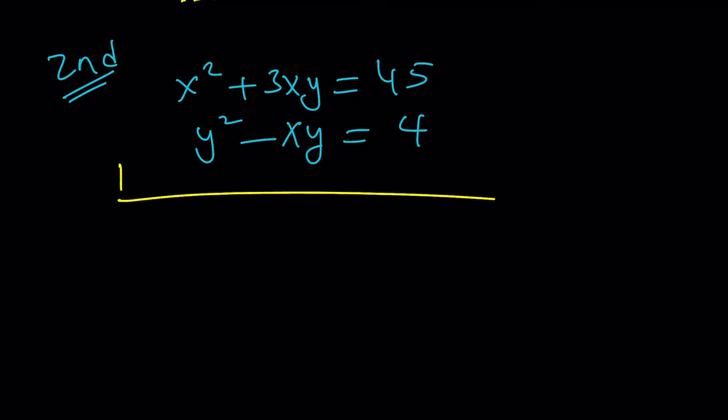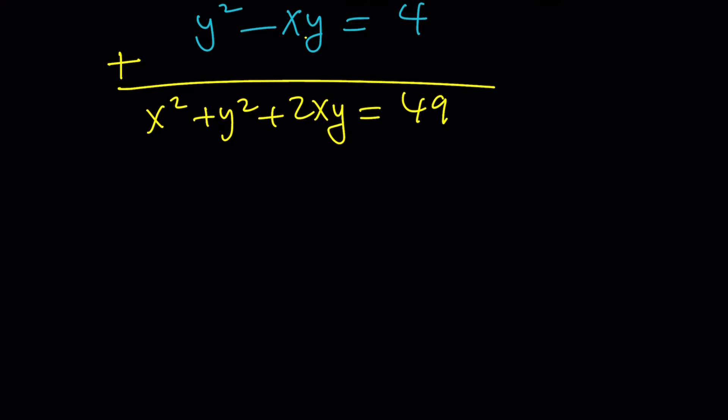So, for example, if you add these two equations, you probably saw that, right? Some of you, at least. You're going to get x squared plus y squared plus 3xy minus xy is going to give you 2xy. And 45 plus 4 is 49. What do you notice? Hopefully, you know that this is x plus y squared. Uh-oh. We got a perfect square on both sides.